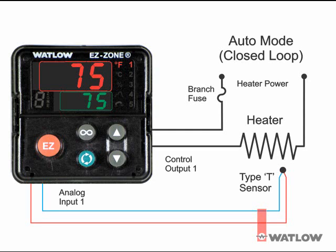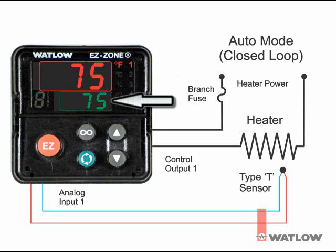Closed loop control uses the process sensor to determine the difference between the process value, shown here in red on the upper display, and the closed loop setpoint, shown here in green on the lower display. The controller applies or removes power to a control output to reduce the difference.